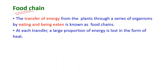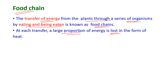The transfer of energy from plants through a series of organisms by eating and being eaten is known as a food chain. In a food chain, at each transfer, a large proportion of energy is lost in the form of heat.